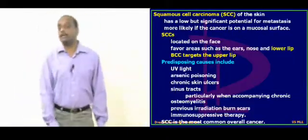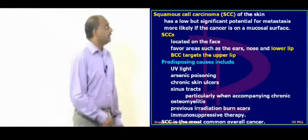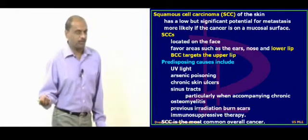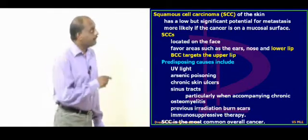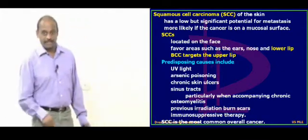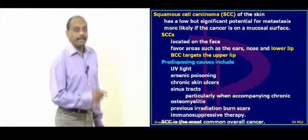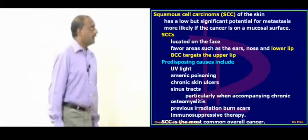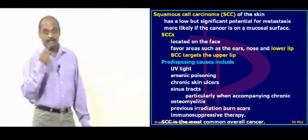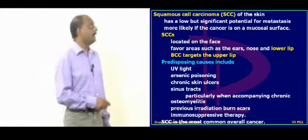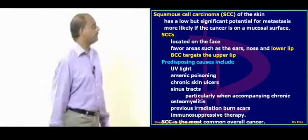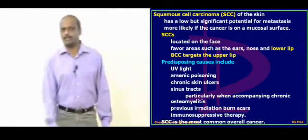Now let us talk about squamous cell carcinoma. The most important thing is it also has a very low metastatic potential, but compared to basal cell carcinoma, it is more metastatic. It arises from the mucosal surface. The upper lip is the important target of basal cell carcinoma, whereas the lower lip is favored by squamous cell carcinoma. It is also found on the ears, nose, and typically located on the face.